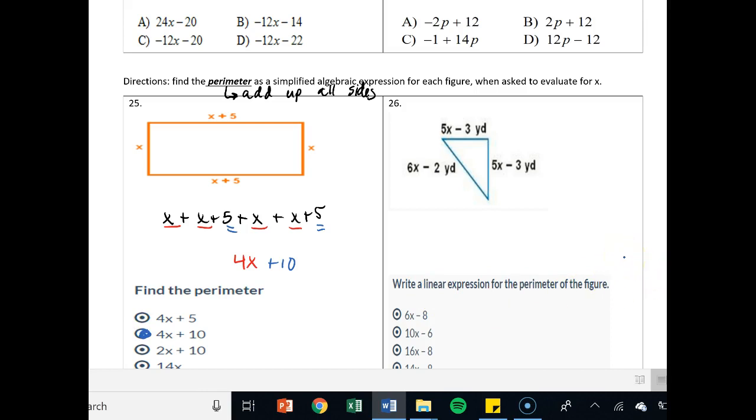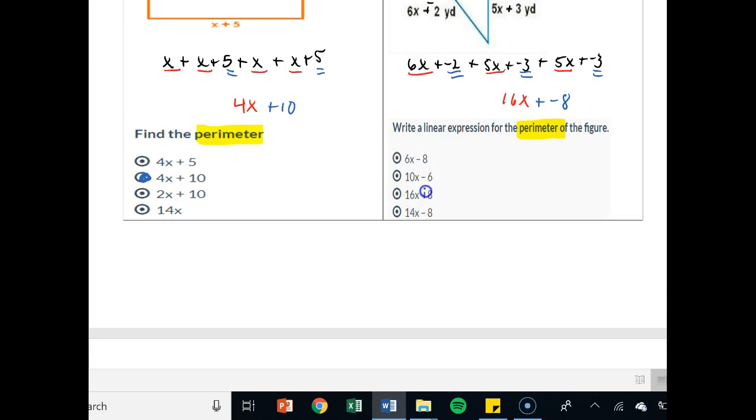Again, perimeter. Add up all sides. It says what is the linear expression for the perimeter of the figure. If it says perimeter, you should immediately say, hey, I'm adding up all my sides. So 6x minus 2 or plus negative 2, plus 5x minus 3 or plus negative 3, and then plus 5x plus negative 3 again. Like terms. 6x, 5x, 5x. That's 16x. Negative 2 plus negative 3 plus negative 3. That's negative 8. So looking for 16x plus negative 8. Not going to find it unless you do that plus negative 8. There's your answer.